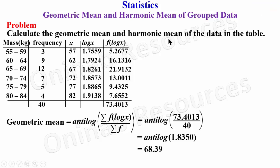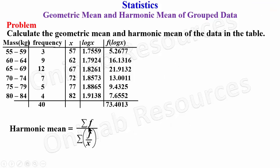We then go ahead to calculate the harmonic mean. For the harmonic mean we have summation of f over summation of f by x. That means we already have summation of f which is 40. We need an additional column for f by x.